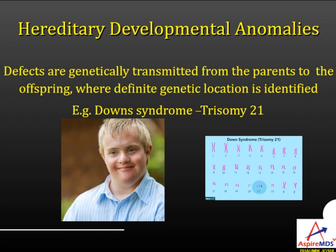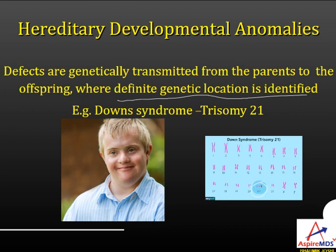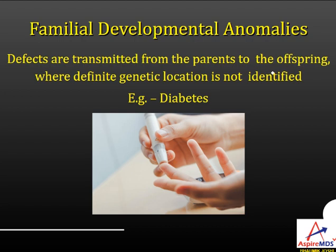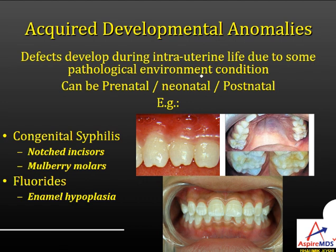Next are hereditary and familial developmental anomalies. In hereditary developmental anomalies, defects are genetically transmitted from parents to offspring where a definite genetic location is identified — for example, trisomy 21 in Down syndrome. In familial type, defects are also transmitted from parents to child, but the definite genetic location is not identified — example is diabetes. Acquired developmental anomalies occur due to some pathological environmental condition during intrauterine life. Examples include congenital syphilis, causing notched incisors and mulberry molars, or fluorosis causing enamel hypoplasia.